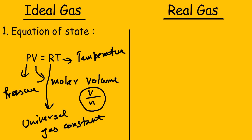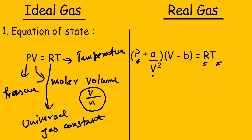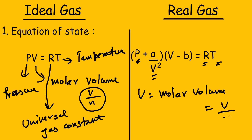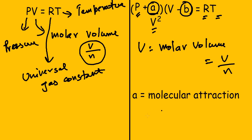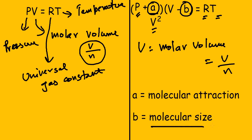For ideal gas the equation of state looks simple — PV equals RT — but for real gases there are a wide variety of equations of state. The particular one we discuss here is the Van der Waals equation of state. In this equation, a is a constant which accounts for molecular attraction, and b is a constant which accounts for molecular size. These two terms make the Van der Waals equation different from the ideal gas equation of state.